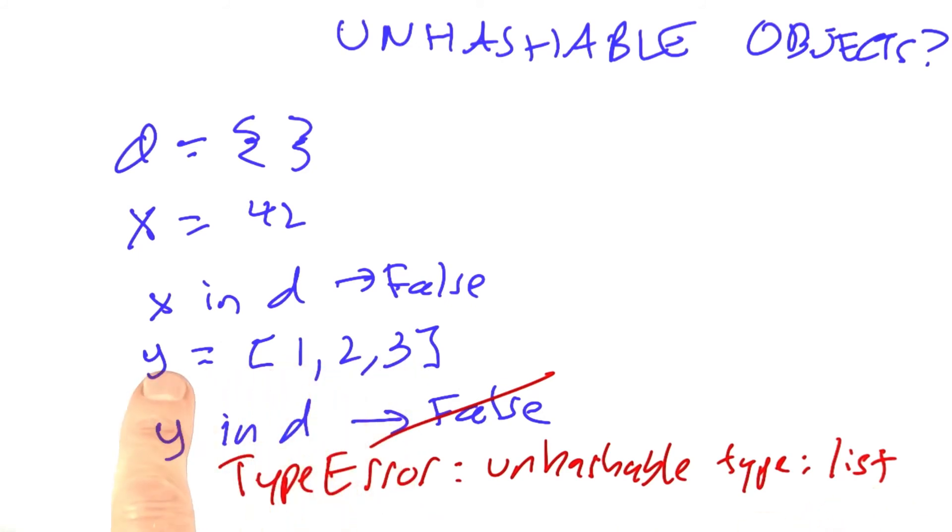That means we were trying to look up y in the dictionary, and a dictionary is a hash table. It's implemented as a hash table. In order to do that, we have to compute the hash code for y, and then look in that slot in the dictionary. But this error is telling us that there is no hash code for a list. Why do you think that is?